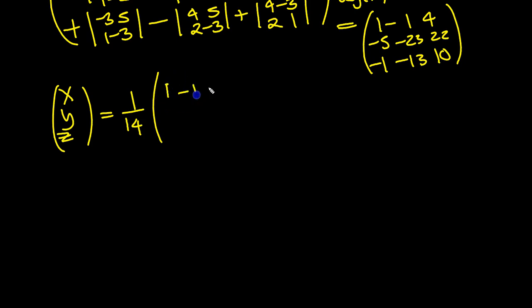And let's write down our answer then for x, y, z over here. So x, y, z is 1 over the determinant, which is 14, wasn't it? And then times by this adjoint, which is 1, -1, 4, -5, -23, 22, -1, -13, and 10. Times by what we had on the right-hand side, which was 0, 8, 9.